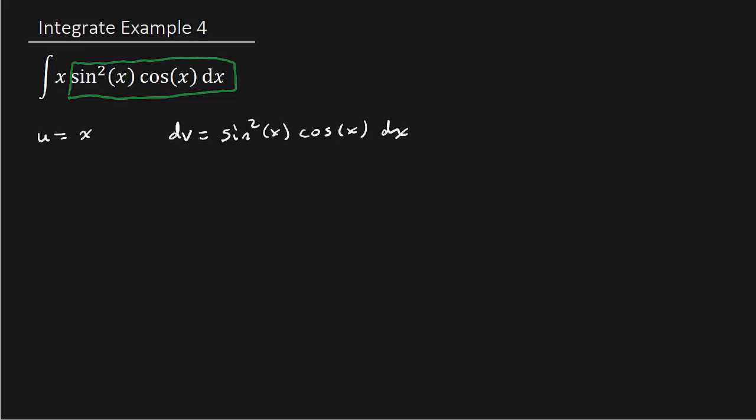Alright, and then when we go to integrate this, that's just a u substitution there. See, we can, and instead of using u, since I used a u here, I'll use w. So we'll let w equal sine x and then dw equals cosine x dx.